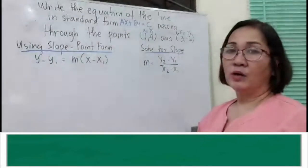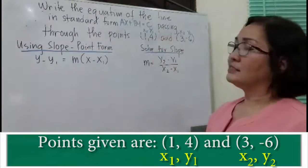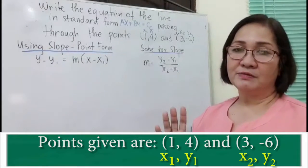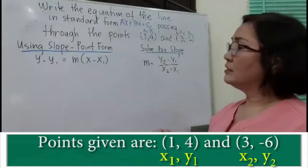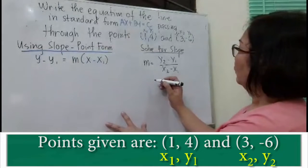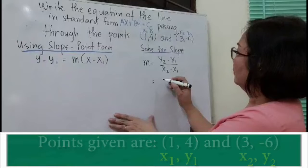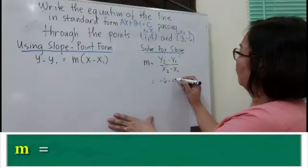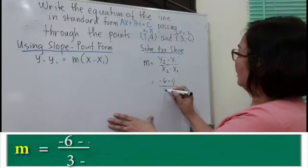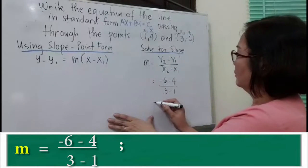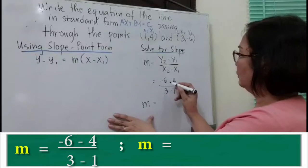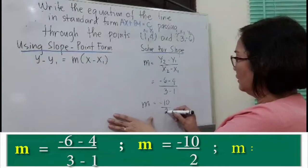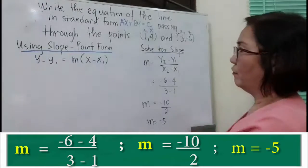The first point is (1, 4), so let us use that as x sub 1 and y sub 1. The second point is (3, negative 6), so let us use that as x sub 2 and y sub 2. Substituting into the formula: y sub 2 is negative 6, minus y sub 1 which is 4, divided by x sub 2 which is 3, minus x sub 1 which is 1. Simplifying: negative 6 minus 4 is negative 10, divided by 3 minus 1 which is 2, so the slope is negative 5.